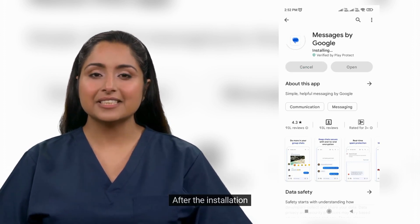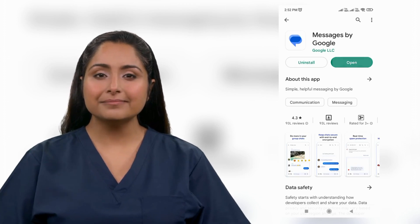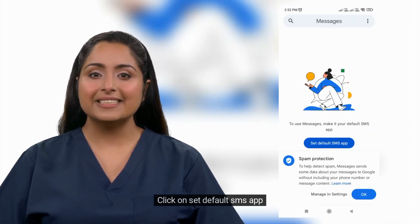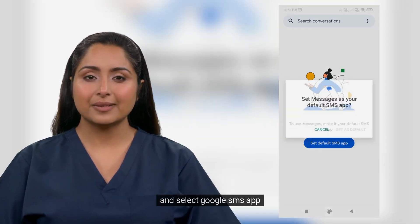After the installation, click on Open. Click on Set Default SMS App and select Google SMS App.